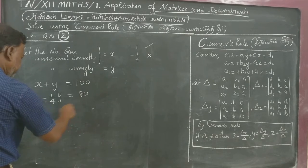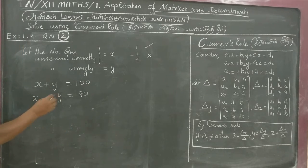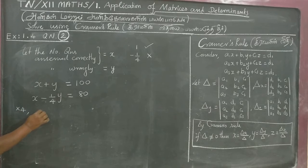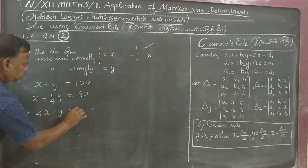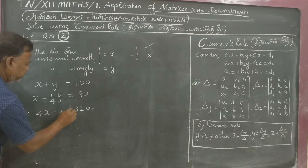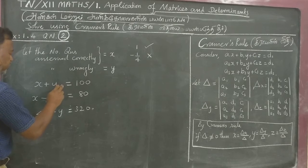First we will make it integer form, multiply by 4. We will get 4x minus y is equal to 320. Equation 1, equation 2.